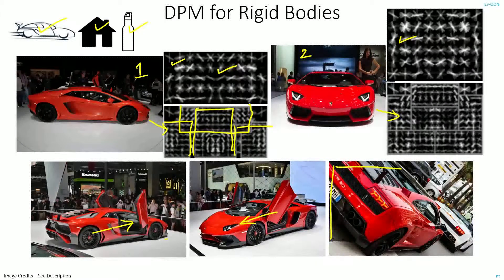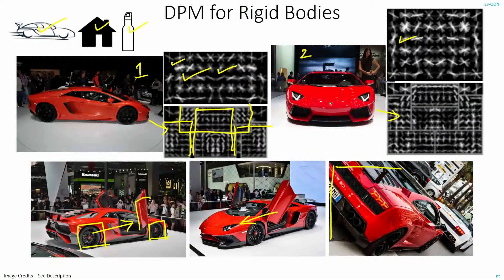Now, when you are trying to apply DPM on top of this car, even if your main filter is failing to identify — or at least fails to identify with a high level of confidence — your part filter might still be able to say that these are the front and rear wheels of the car and this is the door portion, etc. So this way, since you are adding up the scores from both the detections, your chances of identifying the object might increase.